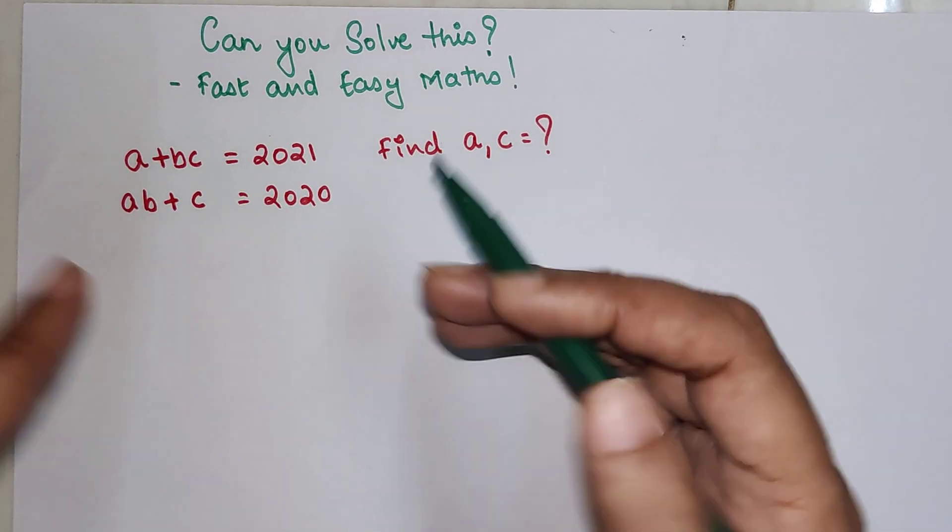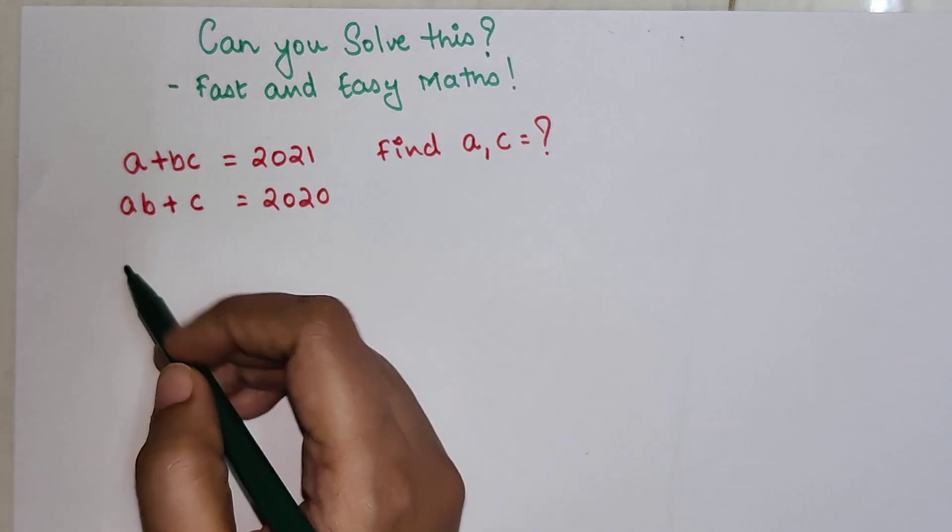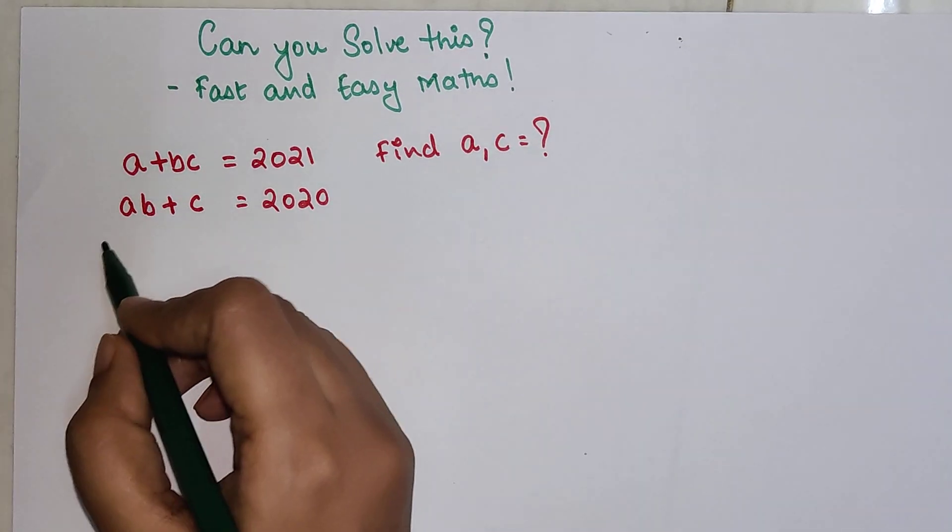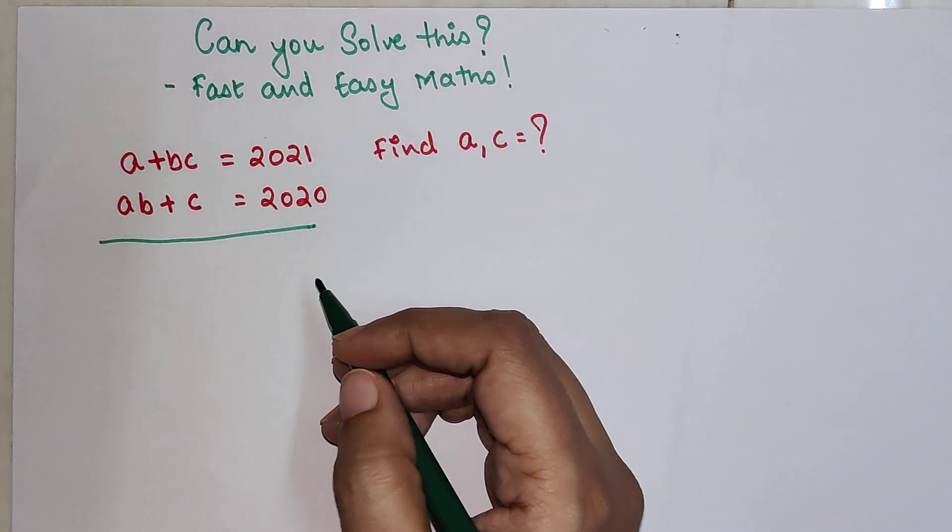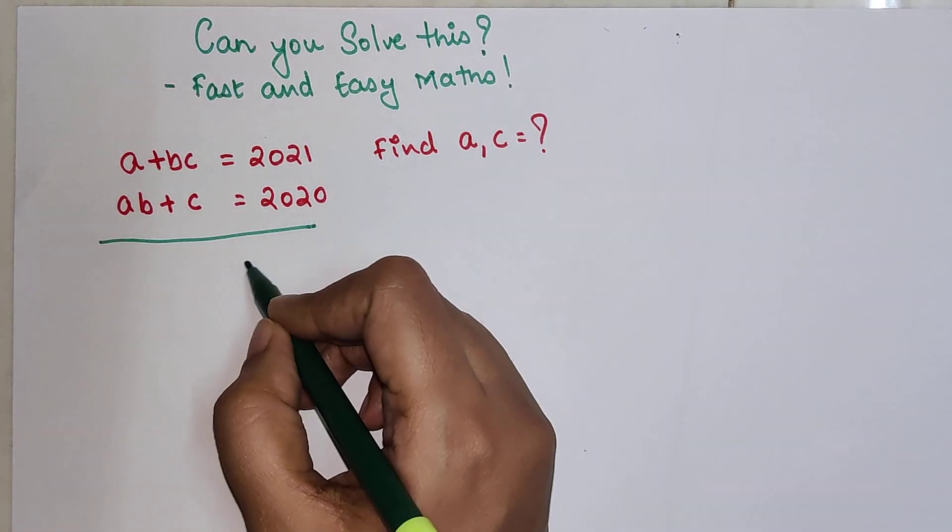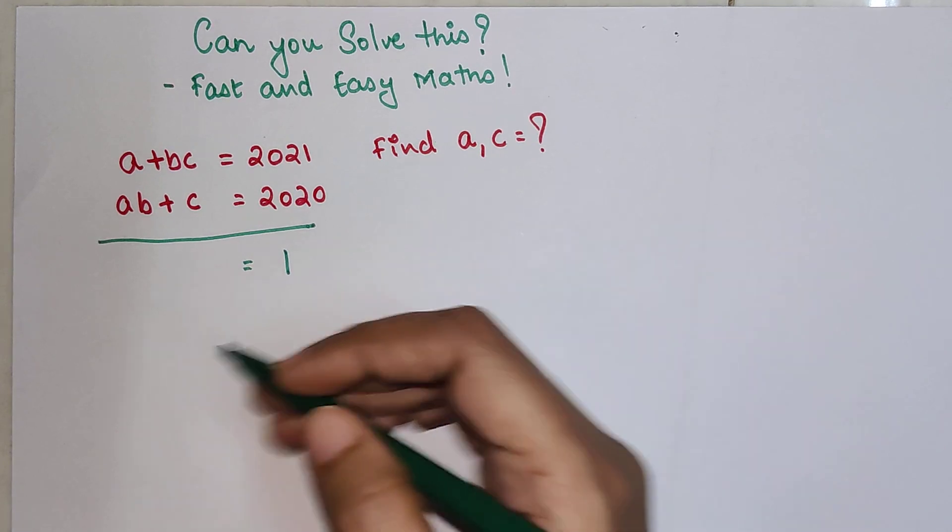So when you have something like this, this looks a bit tricky. So what you should do is simply try subtracting these two equations. Why am I saying subtracting? Because when you subtract these two here it becomes 1 which becomes very easy for us to solve further.